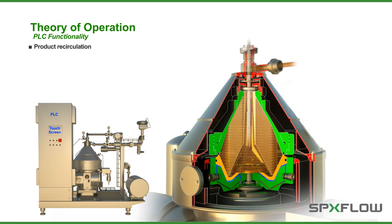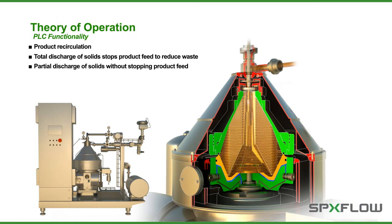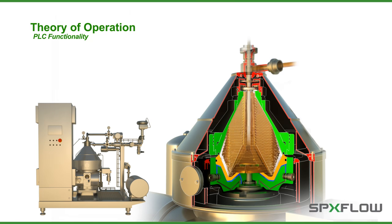Product recirculation and total discharge of solids stops product feed to reduce waste. Partial discharge of solids without stopping product feed is also available. A partial discharge of solids collected in the bowl does not require the separation process to be stopped. The process takes place at the bowl's rated revolving speed without interrupting the product feed into the unit.